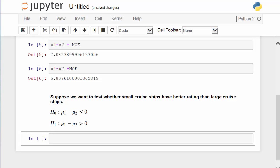Suppose that we want to test whether small cruise ships have better rating than large cruise ships. In this case, the null hypothesis would be mu1 minus mu2 less than or equal to 0. Recall that mu1 is the population mean of population 1, which is about small cruise ships. The alternative hypothesis will be mu1 minus mu2 greater than 0. And this will be an upper tail test.